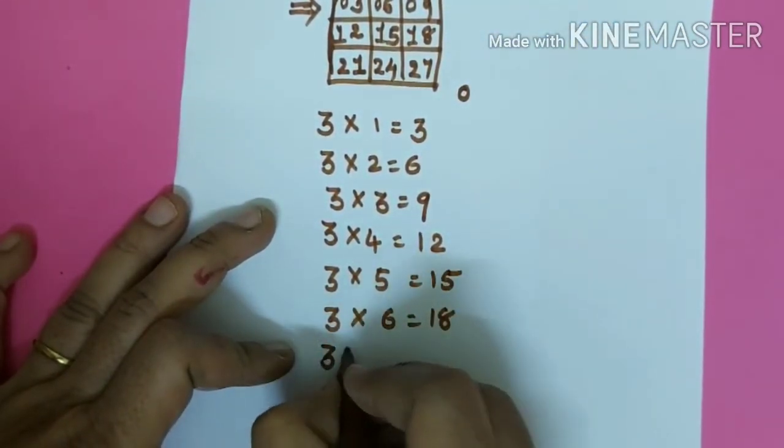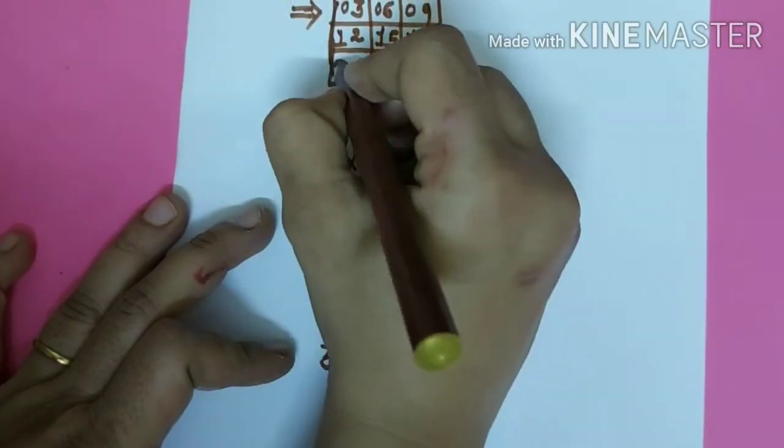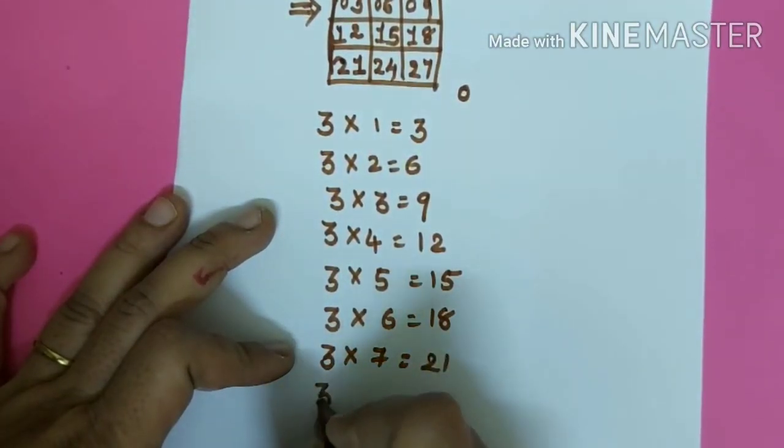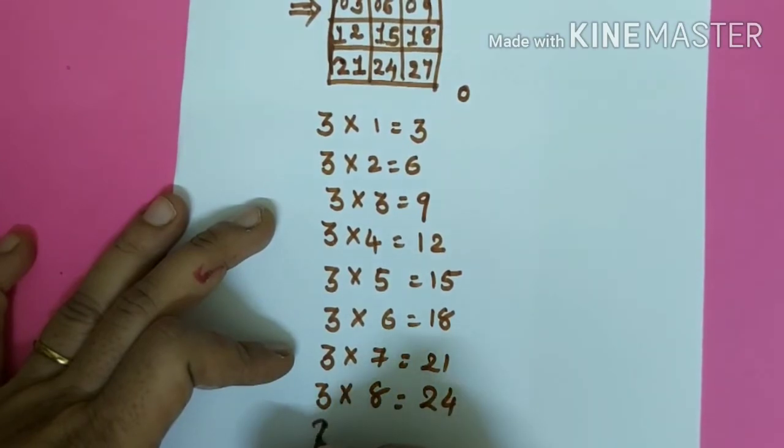Three sevens are in next row, twenty-one. Three eights are twenty-four.